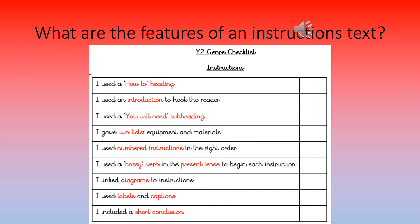What are the features of an instruction text? Please remind yourself. You need a how-to heading, you need an introduction to hook the reader, you need a 'you will need' subheading, you need two lists — one for equipment and one for materials, you need numbered instructions in the right order, you need a bossy verb in the present tense to begin each instruction, you need linked diagrams to instructions, you need labels and captions, and you also need a short conclusion.